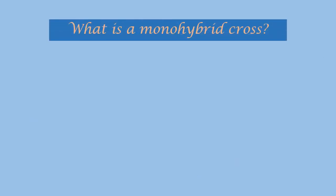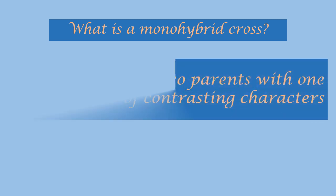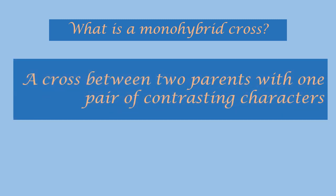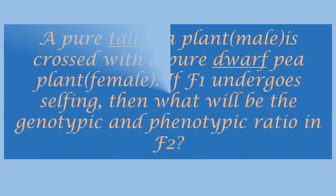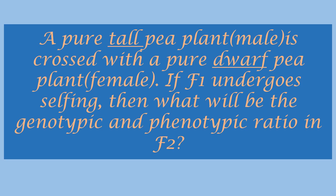In today's session, we will discuss what is a monohybrid cross. A monohybrid cross is a cross between two parents with one pair of contrasting characters. Let us take one example: a pure tall pea plant is crossed with a pure dwarf pea plant. If F1 undergoes selfing, then what will be the genotypic and phenotypic ratio in F2?